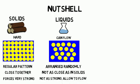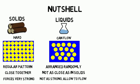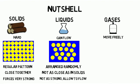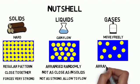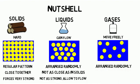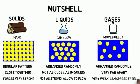Therefore, it allows them to flow. And finally, gases like oxygen can move freely because the particles are arranged randomly. They are very far apart and the forces between the particles are very weak. Therefore, they can spread freely.